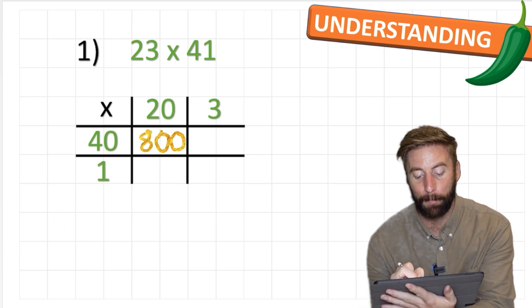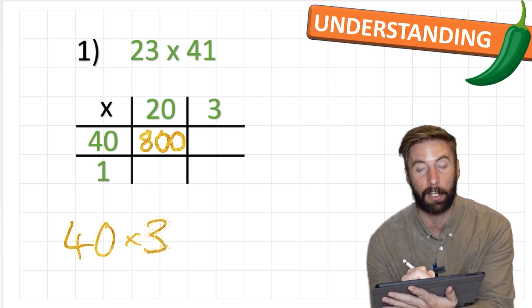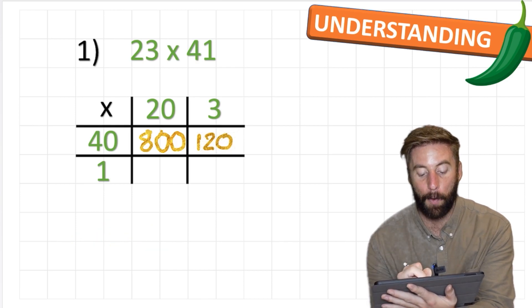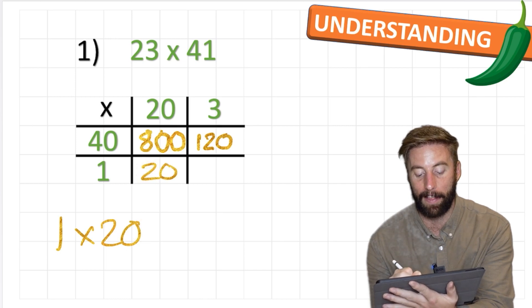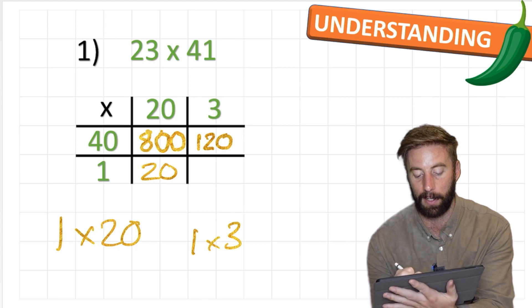Let's apply the same logic to the second part. I have 40 times 3. I'll ignore the 0 to start with. 4 times 3 is 12. Put the 0 back: 120. Now I'm doing 1 times 20, which is 20. And then in the last box I have 1 times 3, which is 3.